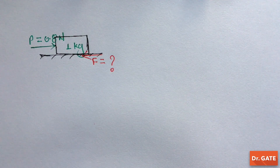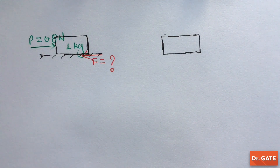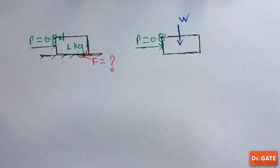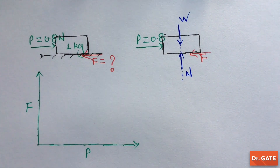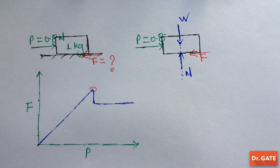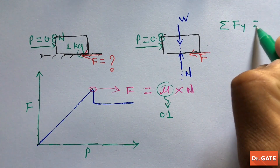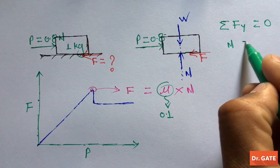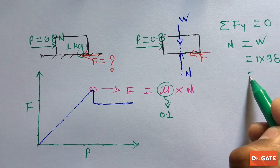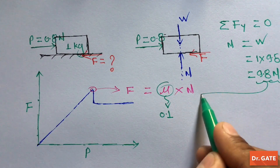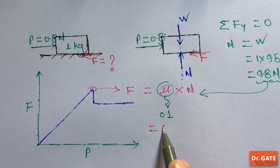To find its value, let's draw the free body diagram of the block. The external pushing force P acts horizontally, weight acts downward, normal reaction of the ground acts upward, and frictional force acts opposing motion. For convenience, let's draw the force versus friction curve. The maximum value of friction is μ × N. The value of μ is 0.1. Since the block is stable in the vertical direction, summation of forces in the y-direction must be zero, giving normal reaction equal to the weight of the block, which is 9.8 N. Putting this value in, the limiting friction is 0.98 N.